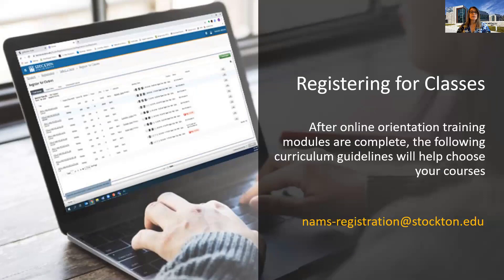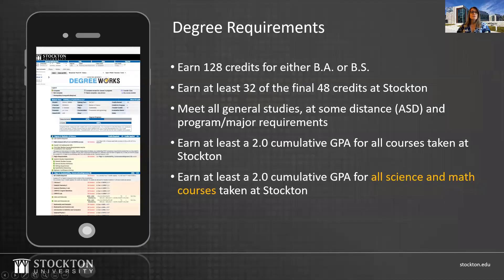Please pay attention to the curricular details discussed in this video to get a general understanding of degree requirements and to carefully select your classes for your first semester. Whether you're pursuing a Bachelor of Arts or a Bachelor of Science degree, you're required to earn a minimum of 128 credits. You are required to meet all the general studies, at-a-distance, and program major-specific course requirements.